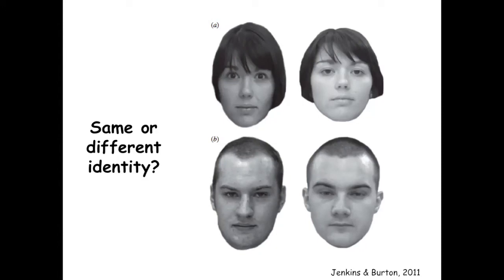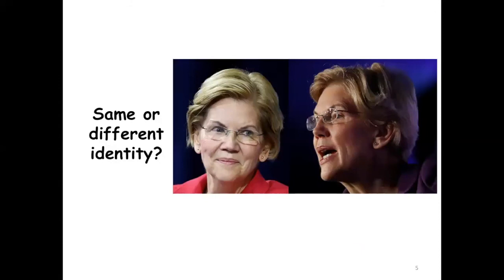In the literature there are several tests built to assess face recognition capabilities. These examples come from the Glasgow Face Matching Test, created by Mike Burton. According to Mike Burton, these are among the most challenging examples. Participants must say whether two pictures belong to the same identity or not. The correct answer is that one pair shows the same identity and another pair shows two different people.